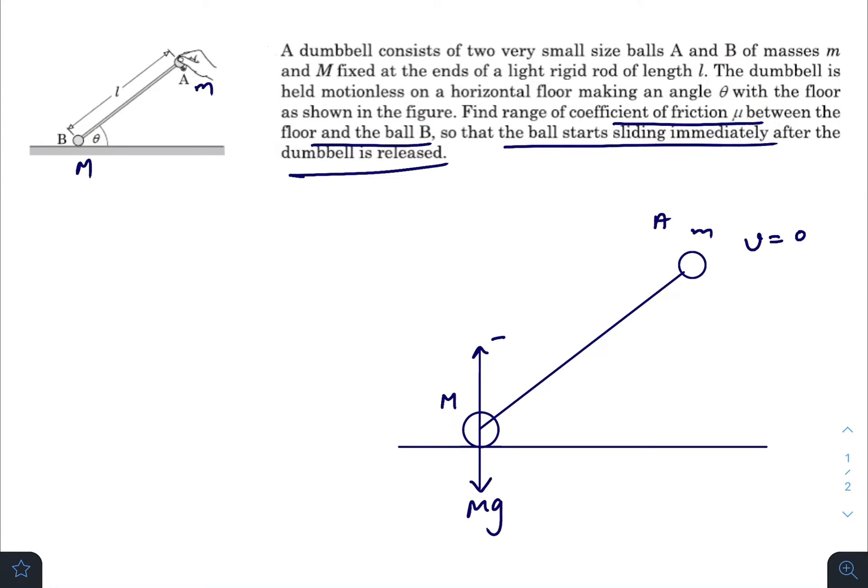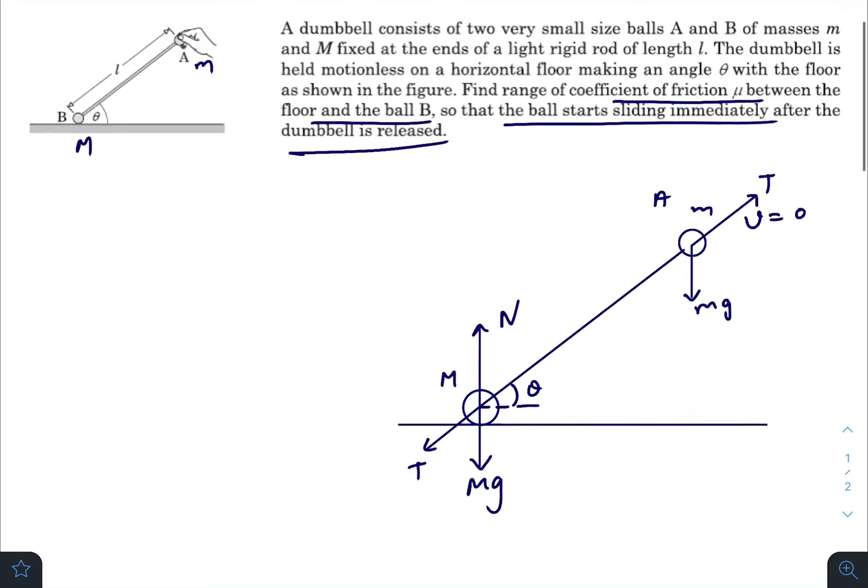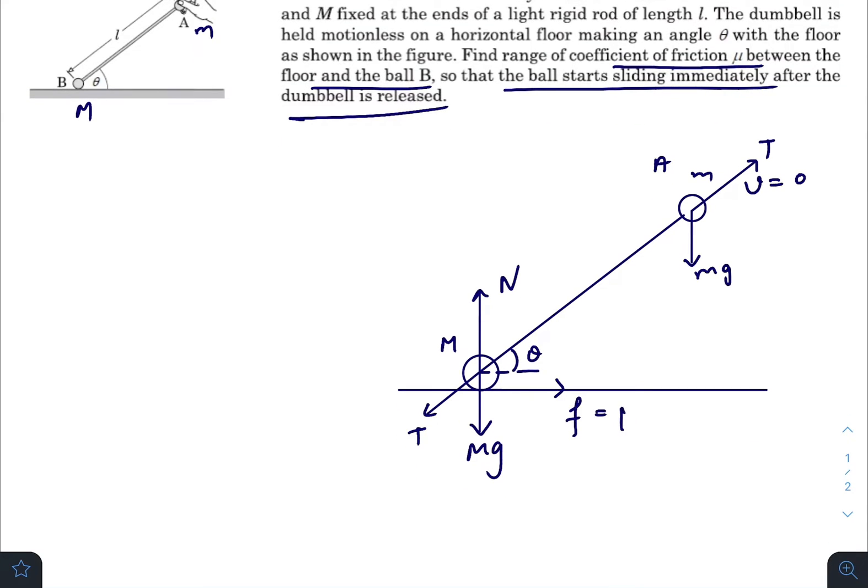Here it will be normal. Due to this light rod there will be a pushing force or a hinge kind of force in this direction. Let that force be T. This angle is theta. Here the force is due to gravity mg, and in the opposite direction there will be this T. And friction is also acting here which is μ times N. This one is also theta.